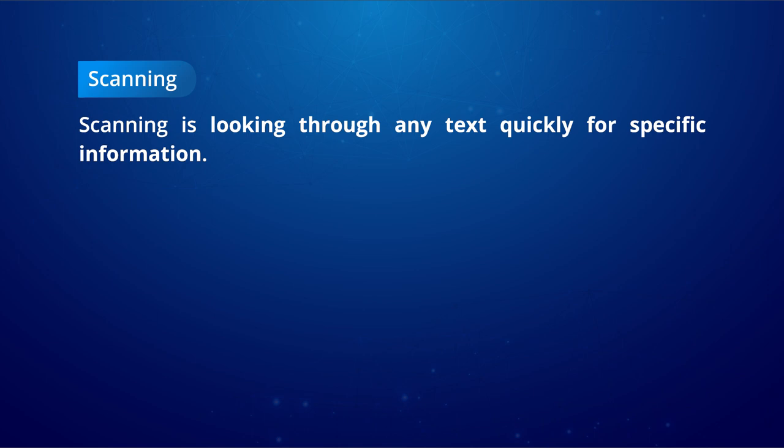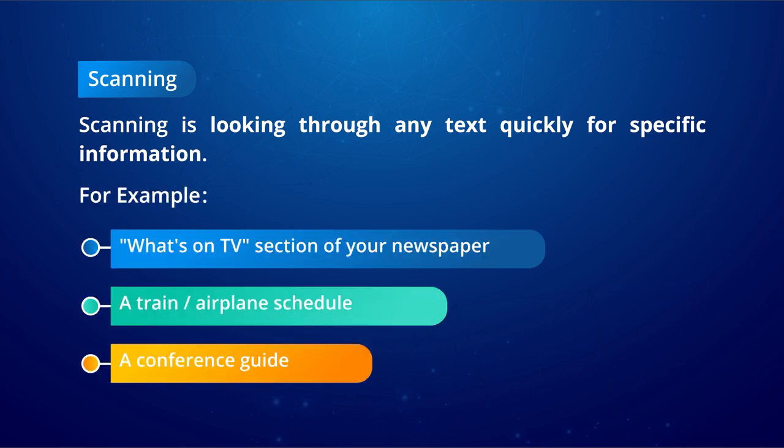The next strategy is scanning. Suppose you are a class 12 student applying for IIT, technical courses, or medicine. You are reading a newspaper looking for available courses — your own area of interest, specific information. Scanning is looking through a text quickly for specific information. We do this when referring to a conference guide, train or airplane schedule, or a section of a newspaper to find specific information.